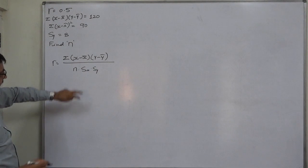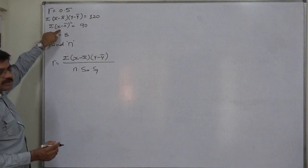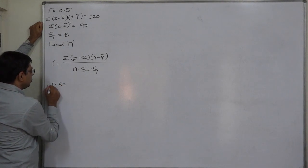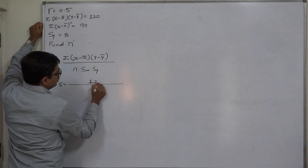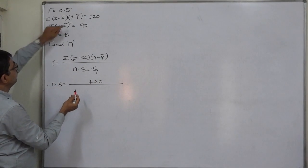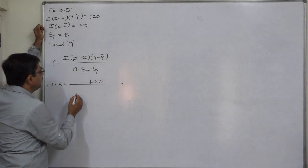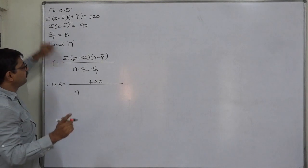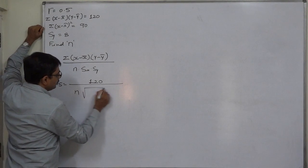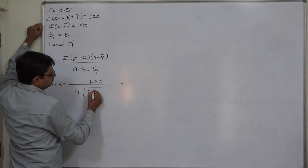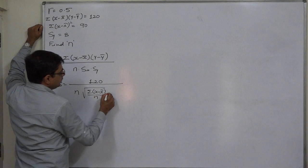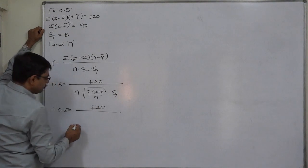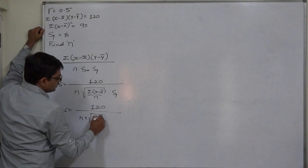See, all the components are there indirectly. In sx, the sigma (x minus x̄)² is also there. Now let us substitute the values. r is 0.5, sigma (x minus x̄)(y minus ȳ) is 120, n is missing, sx contains sigma (x minus x̄)²/n which is 90/n, and sy is 8. So if all available values are substituted, the scenario is like this.